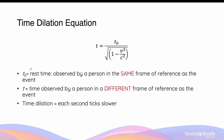In this equation, t0 is referred to as the rest time. This is always measured or observed by a person in the same frame of reference as the events. The event in the previous thought experiment is the light travelling to and from the mirror in the moving spacecraft. t is the time measured by the person in a different frame of reference from the event — the person standing on Earth observing the motion of the spaceship. In any scenario where the event is moving at a very fast or relativistic velocity, t0 is always the shorter time.